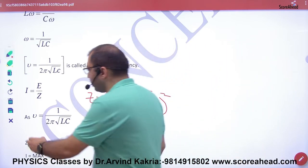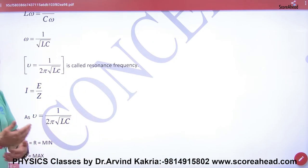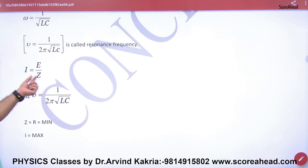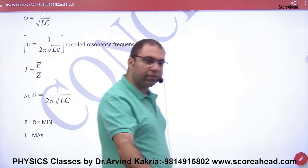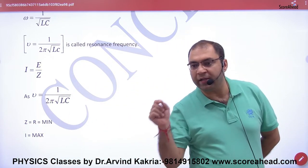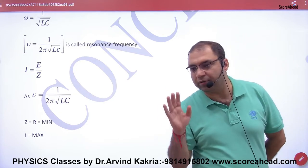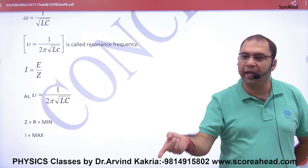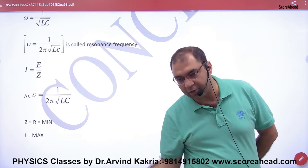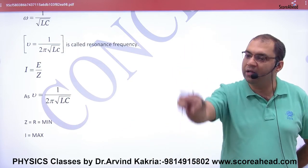On resonance, when XL equals XC, Z is minimum, so current is maximum. Remember that in a series resonance circuit with L, C, R in series, at resonance frequency, current in the circuit is maximum.